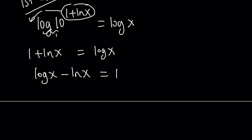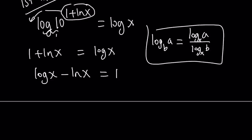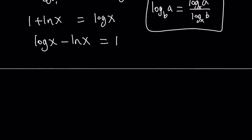And then I'm going to use what's called the change of base formula. So change of base formula works like this: if you have log a with base b, you can write it as log a over log b. Here the base can be anything — you can make it x, e, 10, whatever you want. The base I'm going to use is natural log, which is base e. So log x can be written as ln x over ln 10, minus ln x equals 1.